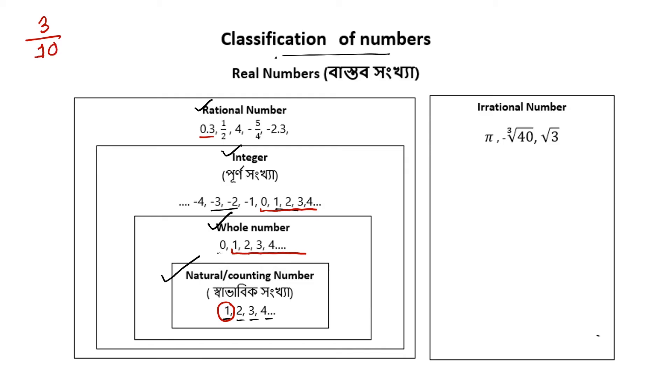After that, 1 by 2 — how do we write that as a fraction? And then 4 — how do we write 4 as a fraction? It would be 4 by 1.